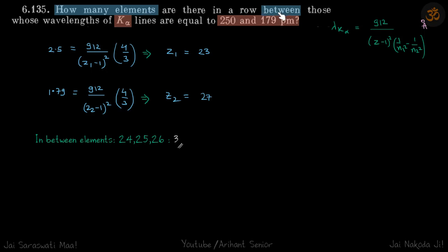How many elements are there in a row between those whose wavelength of k-alpha is between 250 and 179 picometer?